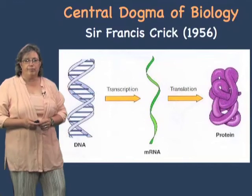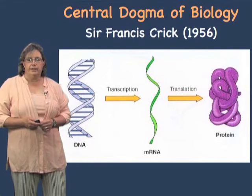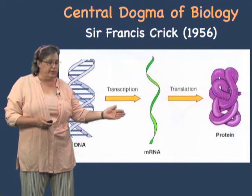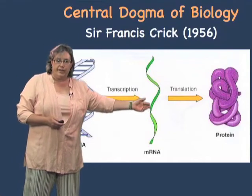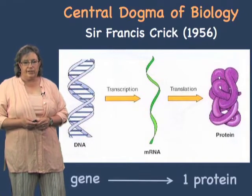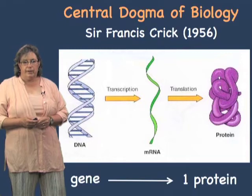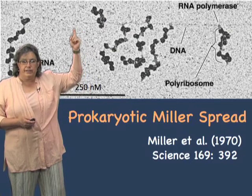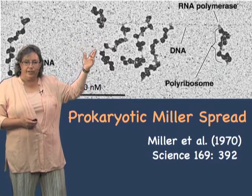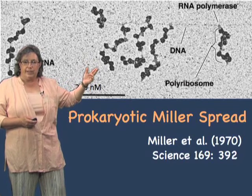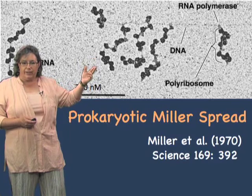Most of you are familiar with the central dogma of biology, which was elaborated by Sir Francis Crick in 1956. The central dogma says that DNA is copied into, or transcribed into, RNA, and then that RNA is translated into a different language — the language of proteins. One of the central tenets is that one gene encodes one protein. This is very much true in bacteria, where the DNA is being transcribed into RNA and simultaneously joined by ribosomes — the big black blobs here are polyribosomes — making protein. So the RNA is translated directly into proteins.